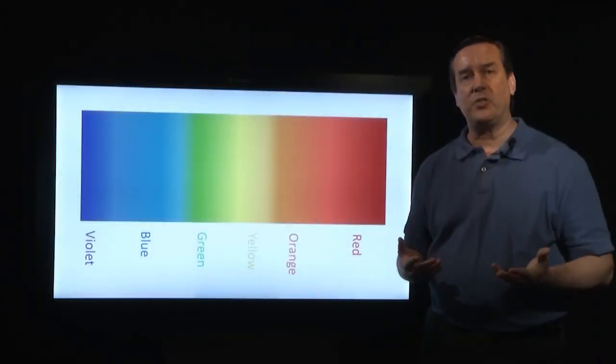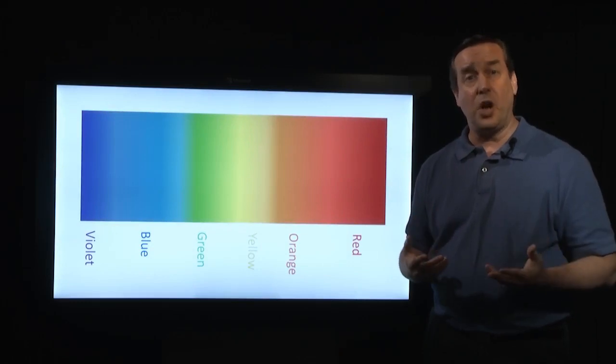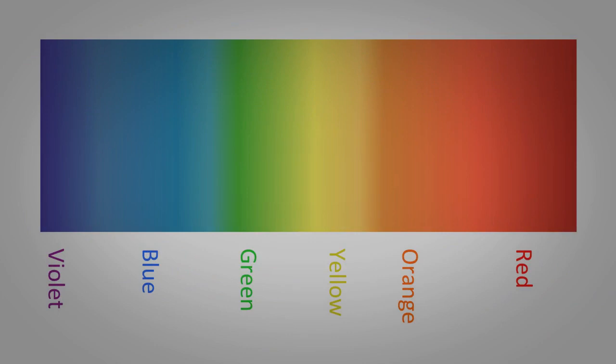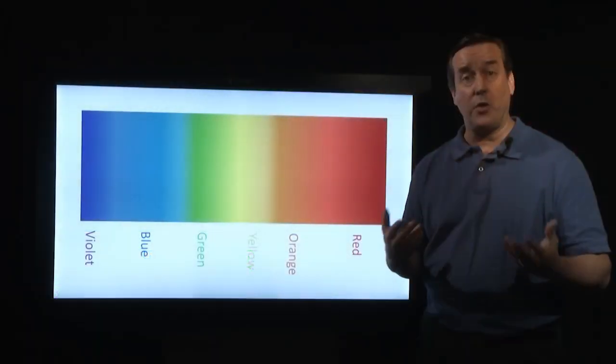Examining this visible light spectrum, one sees the familiar colors of red, orange, yellow, green, blue, and violet. But did you ever wonder if there are other colors?